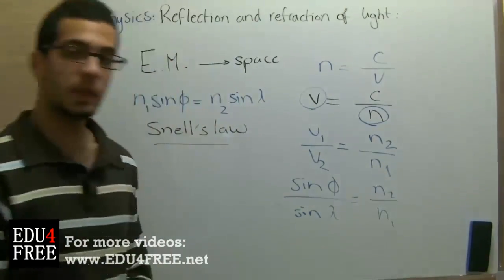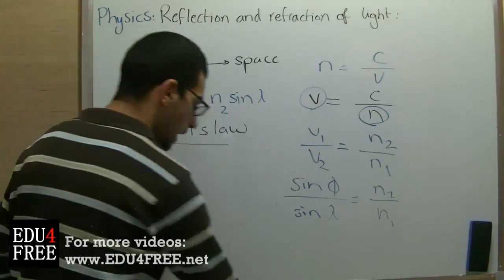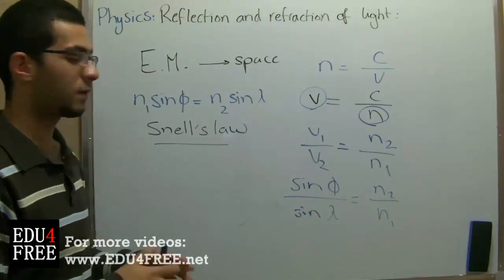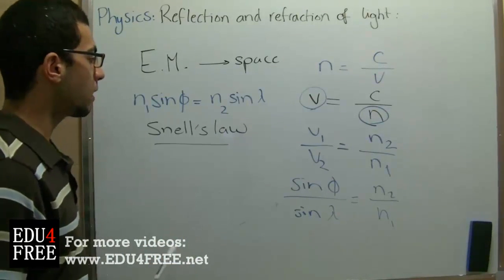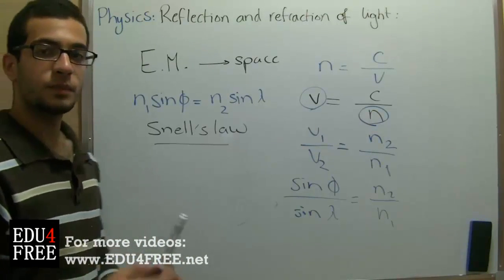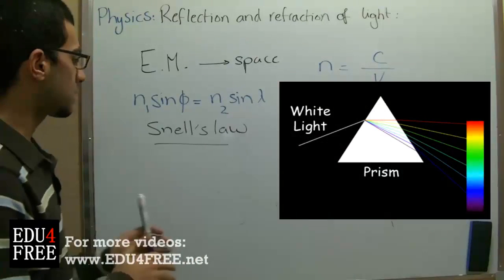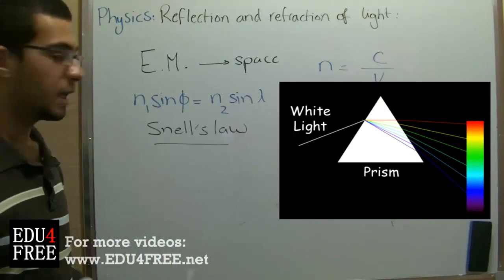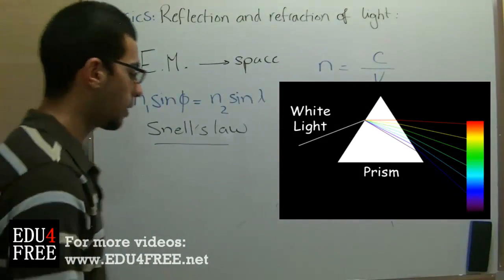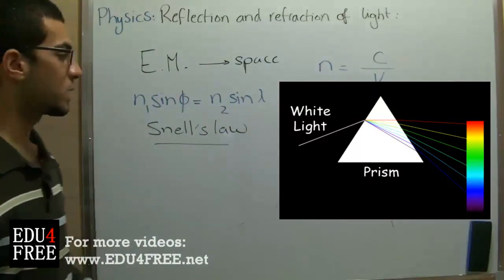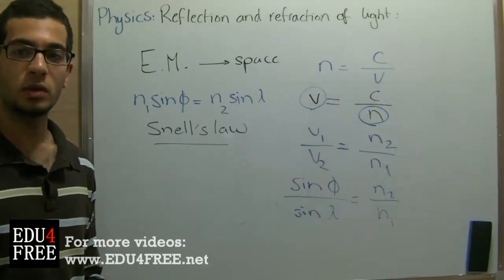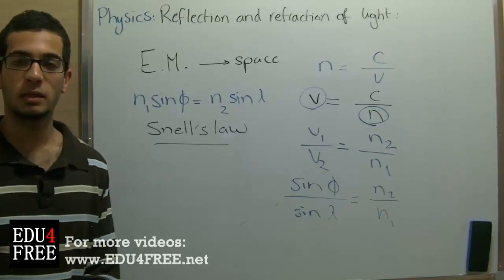Using the absolute refractive index and the different wavelengths of colors — because the light beam appears white but contains a variety of the light spectrum — the different colors of light result from different wavelengths. So if light enters a prism, it is analyzed into a group of colors, and this is a use of reflection and refraction of light: we can analyze a white beam of light into the group of colors it is composed of. The next time we will talk about the interference of light — thank you for watching and see you.